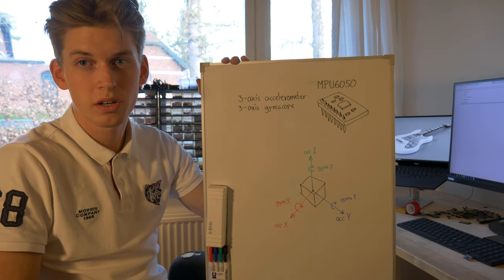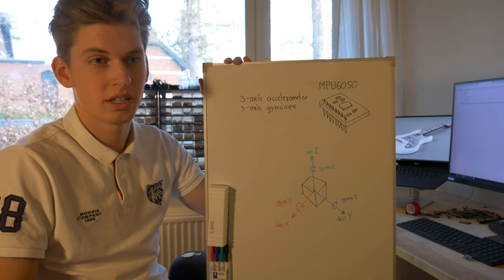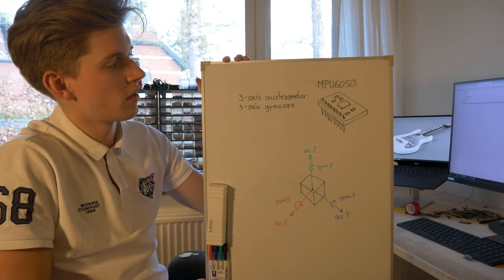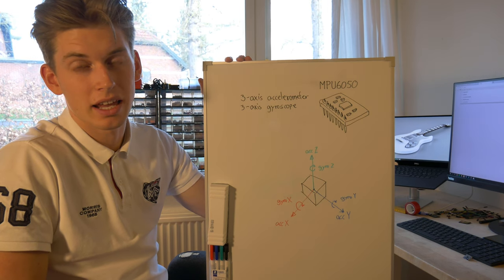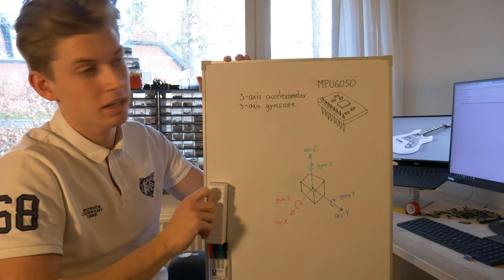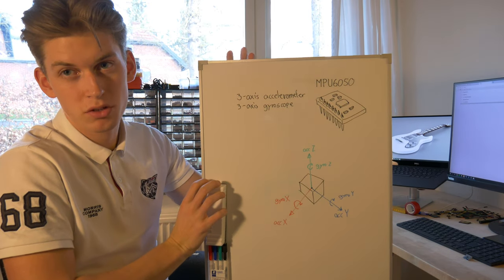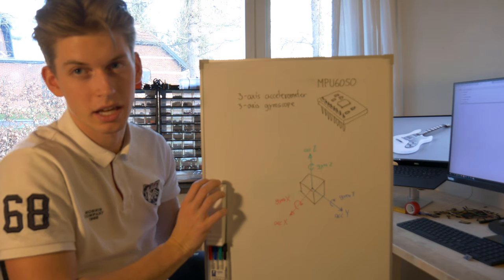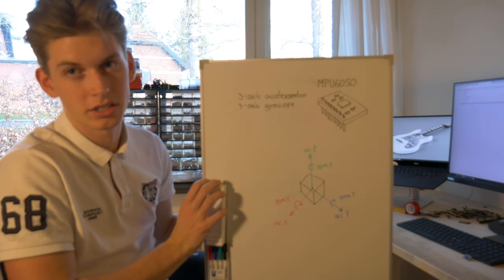I want to give you a quick overview of what we are dealing with. For this project I will be using an IMU called MPU6050 and it's basically just a very small circuit board that has an accelerometer and a gyroscope.